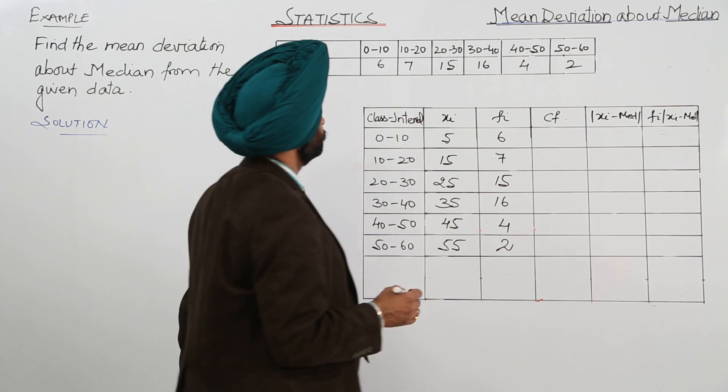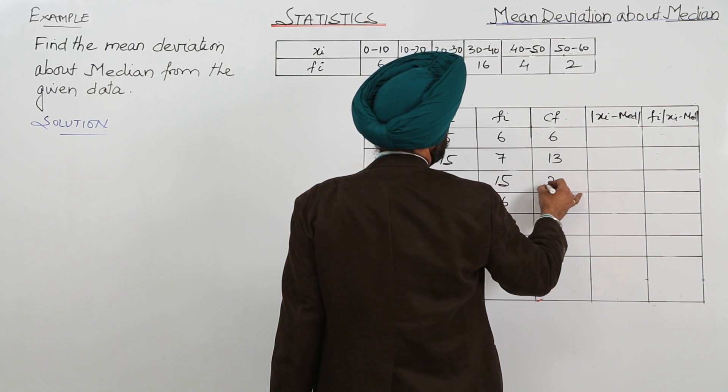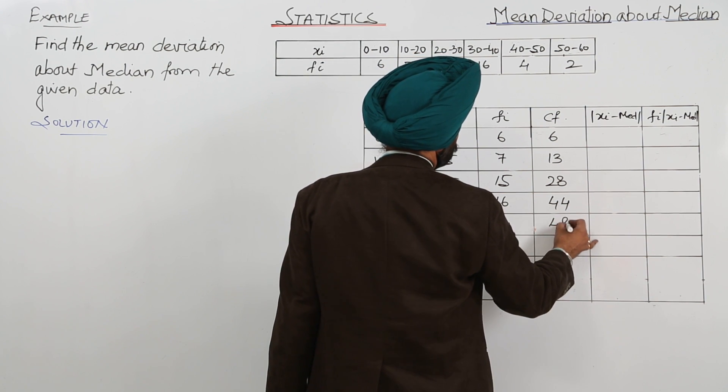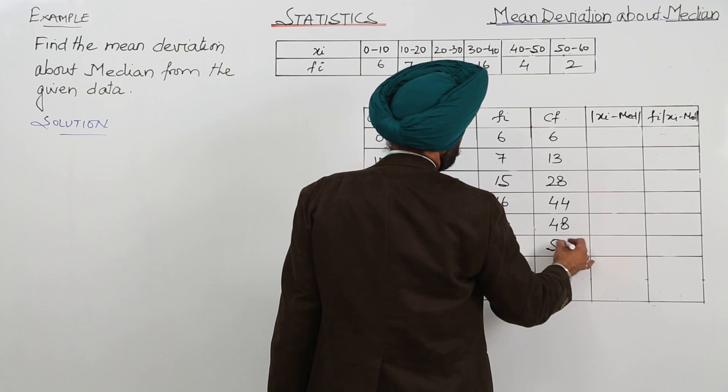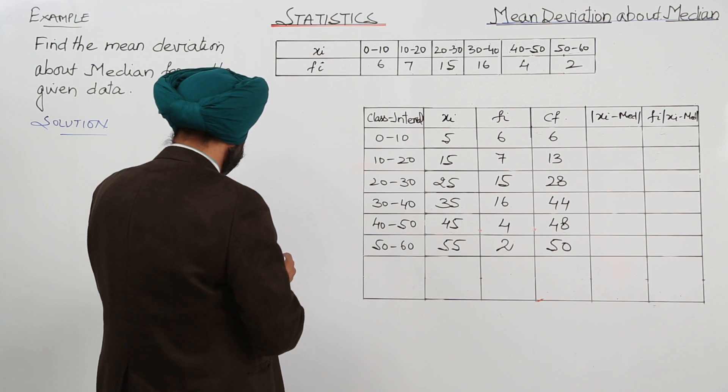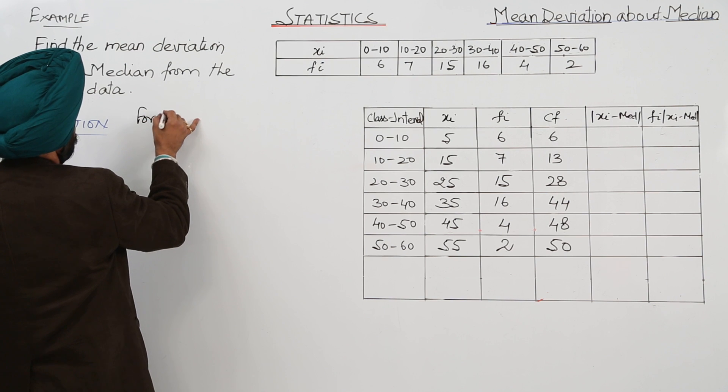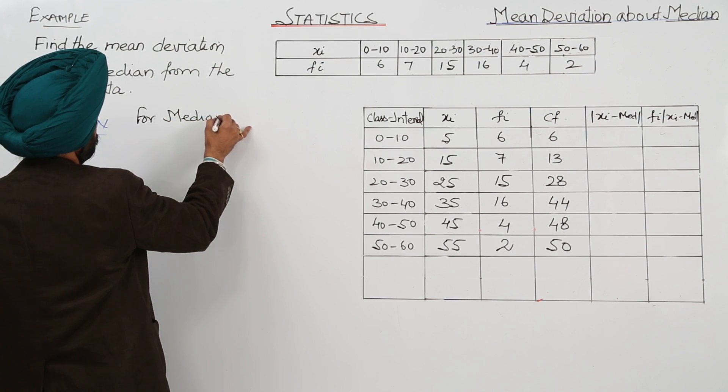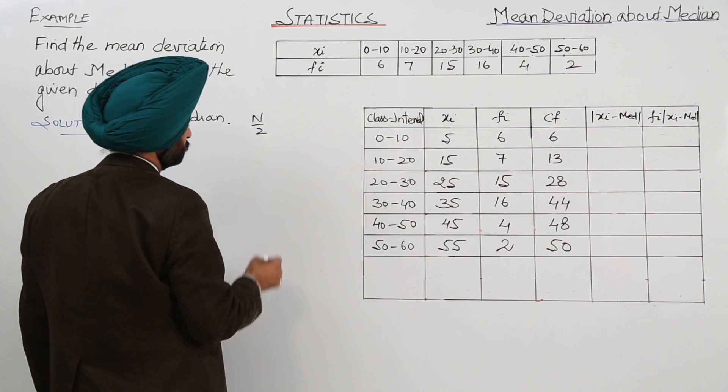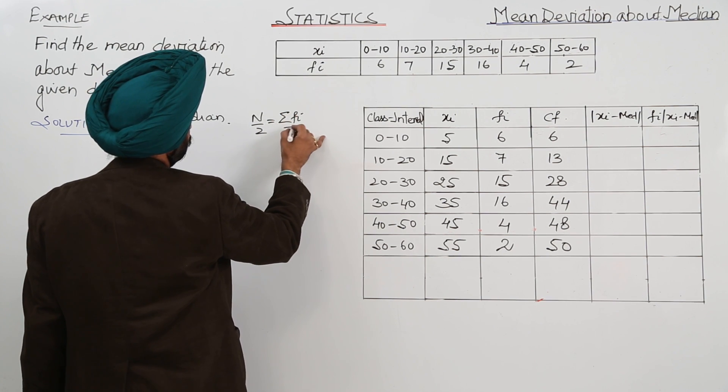Cumulative frequency: 6 as it is, 13, 28, 44, 48, 50. Now first step is to calculate the median. Now for median, n by 2 is equal to summation of Fi upon 2.